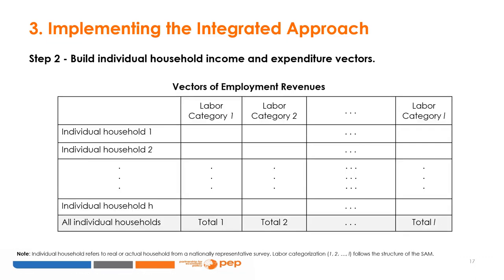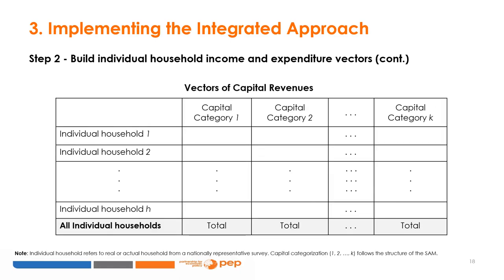Step two: build individual household income and expenditure vectors. Household incomes and expenditure vectors are generated from a nationally representative household survey. Self-employed labor cost is computed from the estimated implicit wage rate of the individuals and the time spent in self-employment or family business work. Salaried employment and self-employment earnings (employment revenues) are computed for all individual households of the survey, following the labor categorization in the SAM. The capital cost is approximated by the residual profit after deducting self-employed labor costs, and capital revenues are computed for all individual households and then grouped according to the capital categories in the SAM.